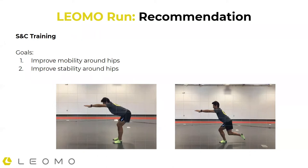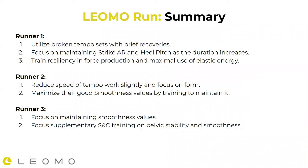That's our three cases. To summarize: runner one — utilize broken tempo sets, focus on maintaining specific MPIs as duration increases, and train resiliency in the gym around elastic energy and force production. Runner two — reduce speed a little, focus more on form, maximize those good smoothness values by training to maintain them. Runner three — focus on smoothness values, maintain them, and work in the gym on pelvic stability and pelvic movement to decrease those values.